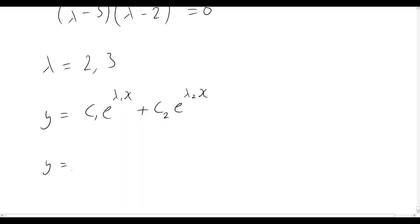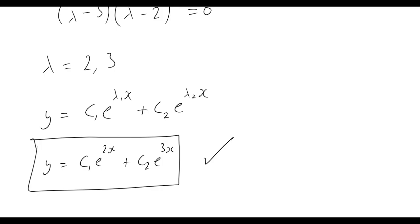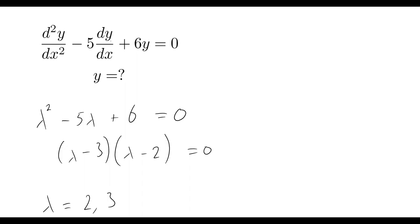Let's quickly figure out what our final answer will become. That's going to be y equals c₁—our first lambda value is 2—so we have e to the 2x plus c₂e to the 3x. And that is our solution to the ordinary differential equation that we've seen above.